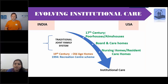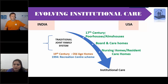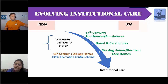In India, the first old age home was established in the early 19th century. In retrospect, the USA's history dates back to the 17th century, where the concept of poor houses — charity homes for the poor — became very popular, which were then replaced by board and care homes.